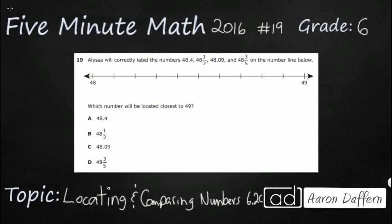So, we need to label this number line here. It runs from 48 to 49 and we need to find which of these numbers, A, B, C, or D, is going to be closest to 49 right here. So, that's our goal. We need to put all these on there and we need to figure out which one is closest. Well, this number line seems to be blank. It runs from 48 to 49 with a whole bunch of lines in between.